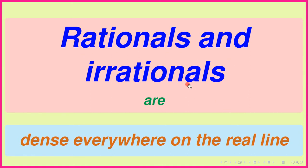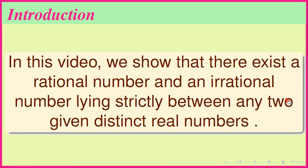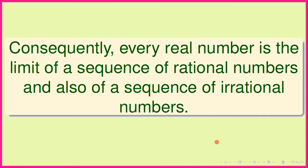Rationals and irrationals are dense everywhere on the real line. In this video, we show that there exists a rational number and an irrational number lying strictly between any two given distinct real numbers. Consequently, every real number is the limit of a sequence of rational numbers and also of a sequence of irrational numbers.